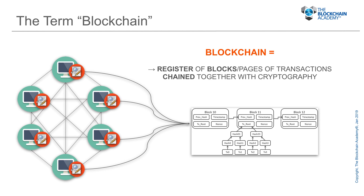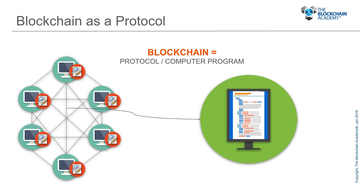Now that's Bitcoin, but where does the term blockchain come from? Well, it comes from the way the database is constructed. The database is essentially a register of blocks — think of them as pages — blocks of transactions that are linked together with cryptography. Each block holds, beside the transactions, also the cryptographic digital fingerprint of the previous block, and in that way a chain of blocks is created, also known as a blockchain. Blockchain is also used to indicate the computer program, the protocol, that allows the participating computers to function correctly.